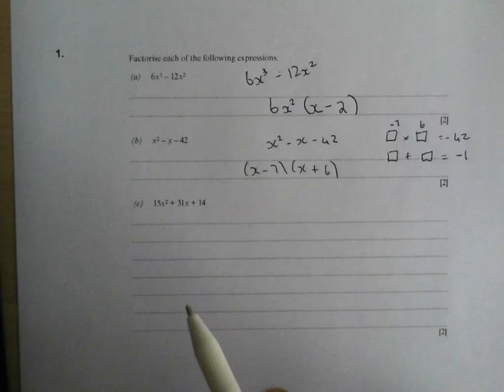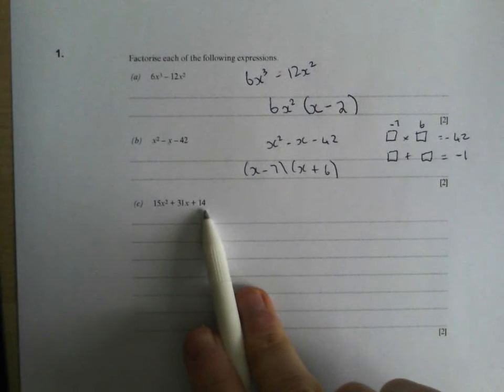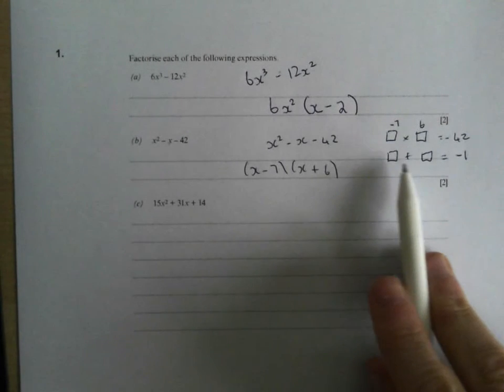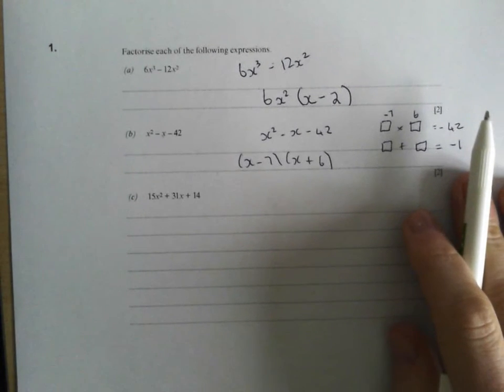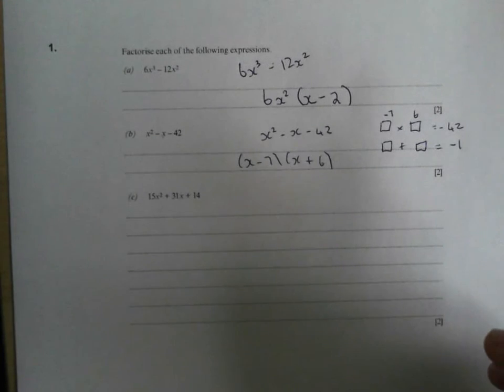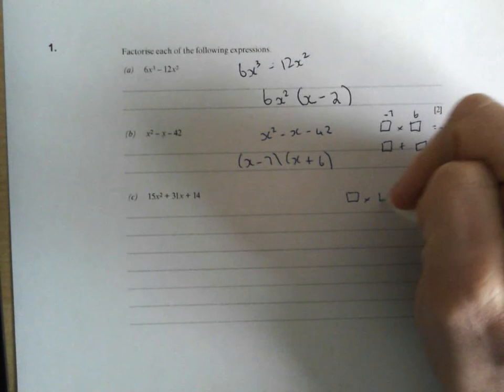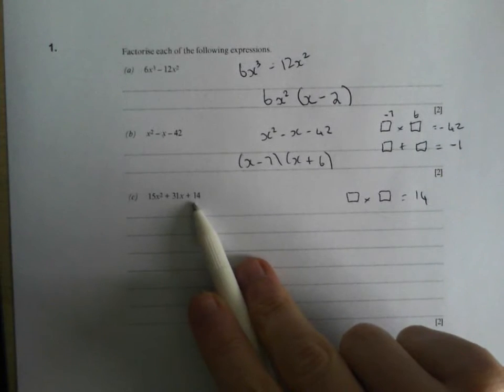OK, and then this is a flipping stupid question. 15x squared, 31x plus 14. Now, when you've got more than 1x squared, you can't use this method. It doesn't quite work anymore. There are lots of different methods around on the internet for doing this, and feel free to Google them and find your own that works. I'll just talk you through how I do it. I still know that my two numbers, when I times them together, have to make 14. I still know that. That rule still holds true for this final number.